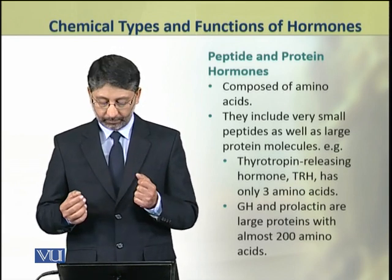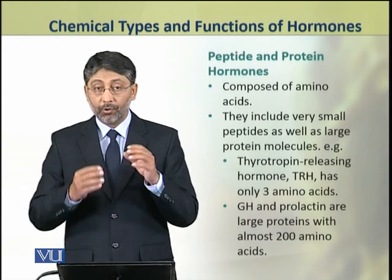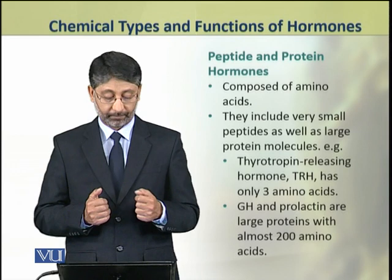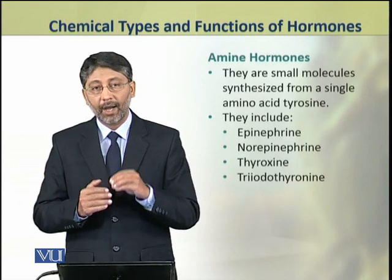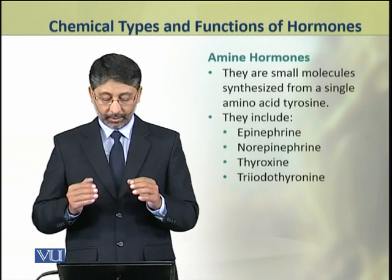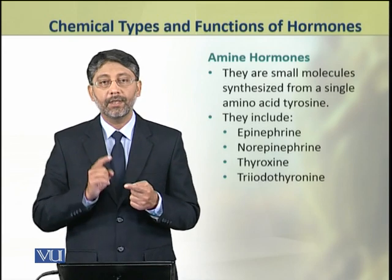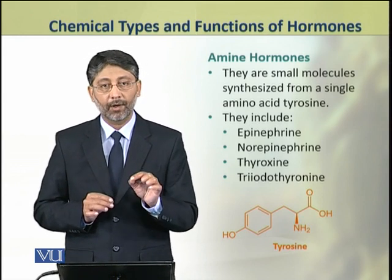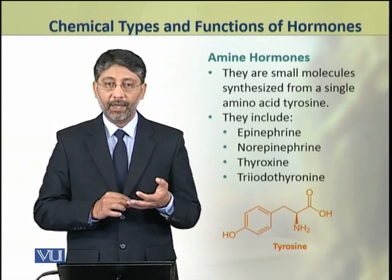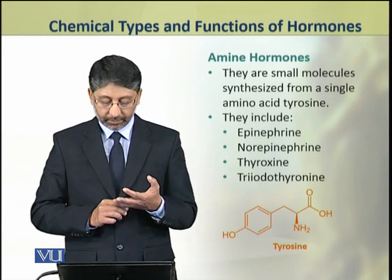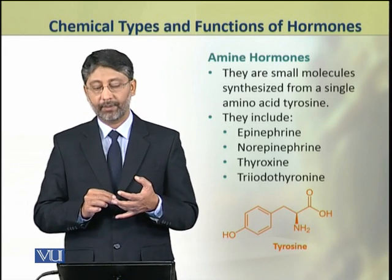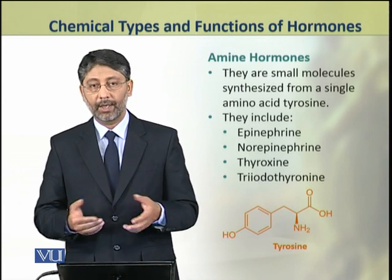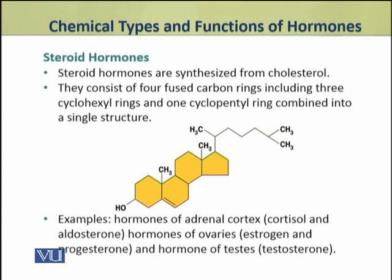The amine hormones are small molecules which are synthesized from a single amino acid: tyrosine. The hormones derived from tyrosine include epinephrine, norepinephrine, thyroxine, and triiodothyronine. Simply put, the hormones of the thyroid gland and the adrenal medulla are amine hormones.